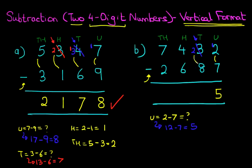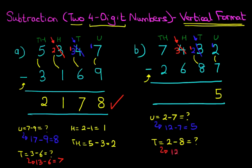Now on to the tens column. We have 2 minus 8. Now again, 2 is smaller than 8, so we cannot do this. What we're going to do is take one from the hundreds column on its left. So let's cross out the 4. 4 minus 1 is 3. And the one we have taken from here, we're going to add it to the tens column. So the tens has now become 12 minus 8. 12 minus 8 is 4. So that's the tens done, 4.